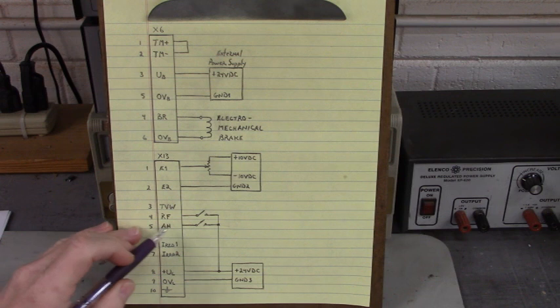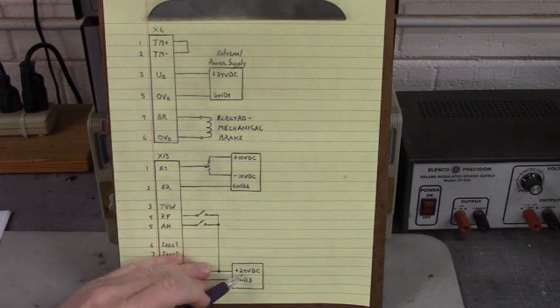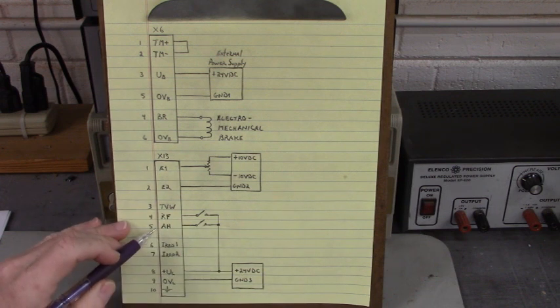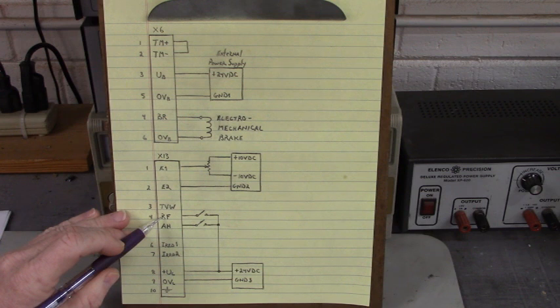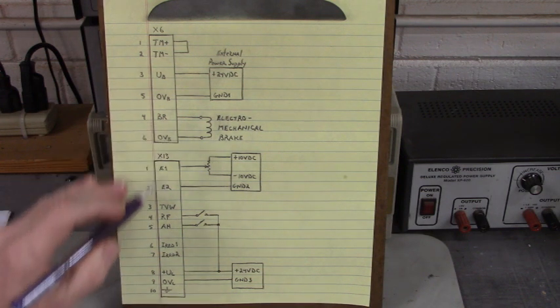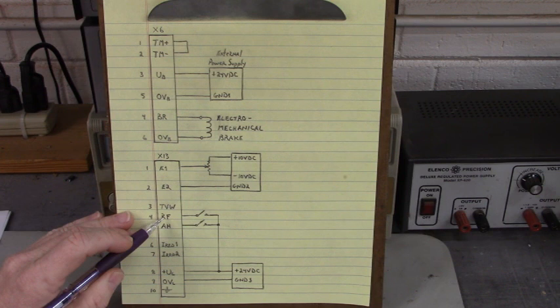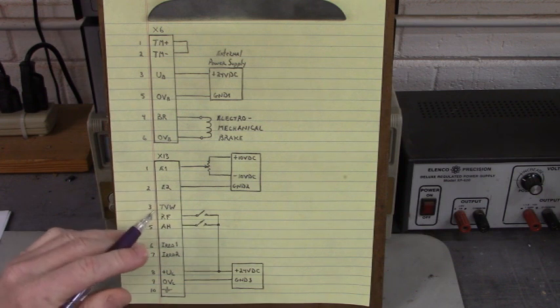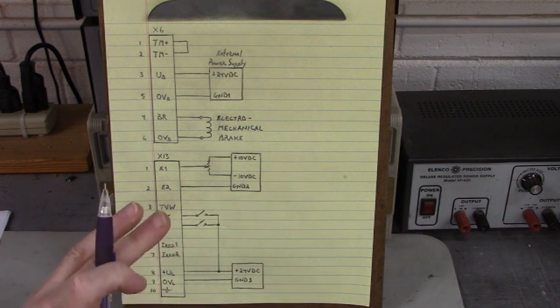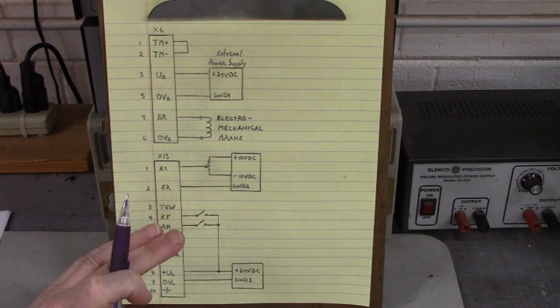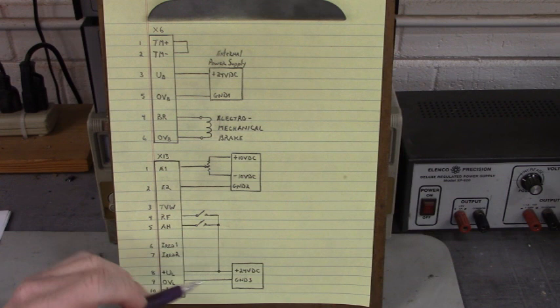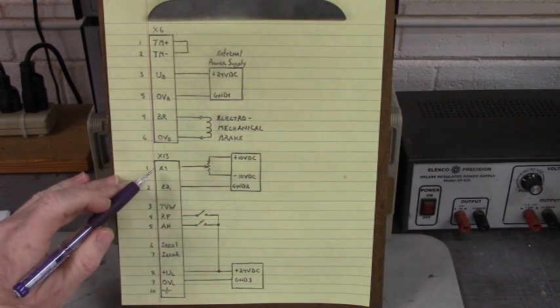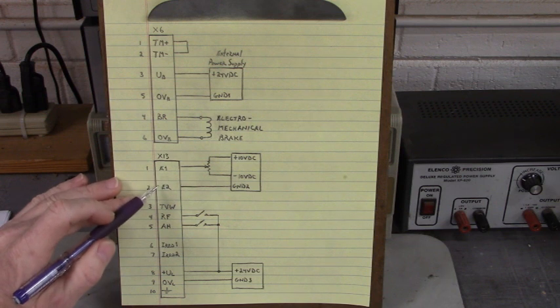The AH terminal down here, connected to plus 24 volts DC, enables the drive to run that motor. So when we close the RF terminal, the brake is released and the motor is placed in a holding torque mode, not rotating but energized and sitting in one position not moving.